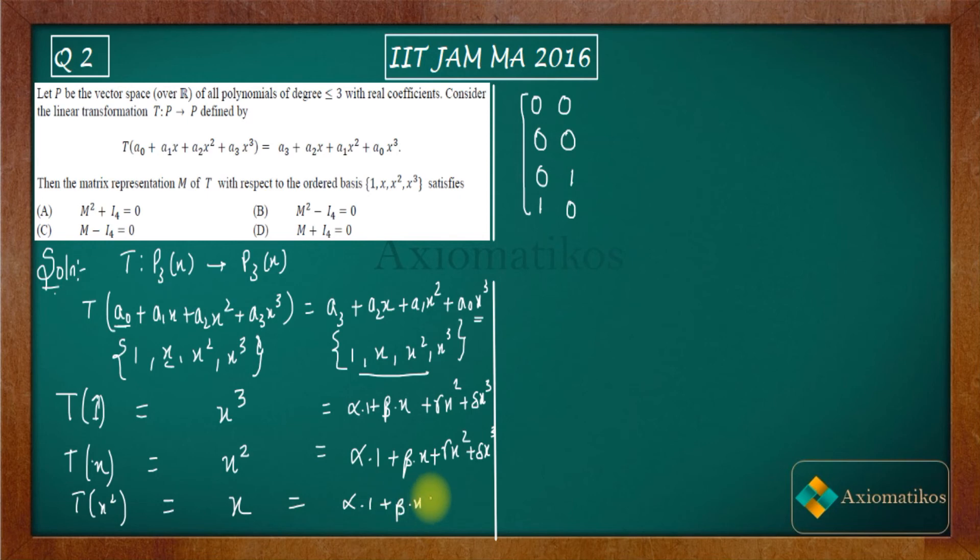So this will be x. Now you can easily check what you will get. You will get 0, since β is 1, you get 0, 1, 0, 0. And in the last one if you check, you can check that yourself, you will get this. You can check x cube, image of x cube also 0 and you will get 1 over here. That's why I am writing this.